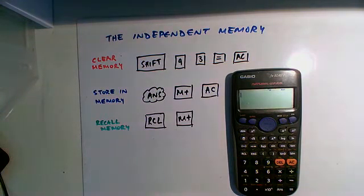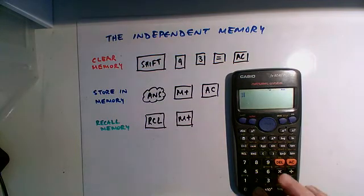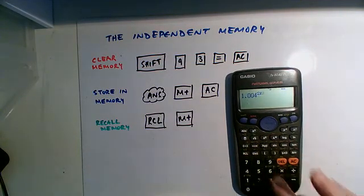So now we're good to go. There's no memories in our calculator. Now let's say I've got an answer to a part of a question that I want to store in the memory. So I'm just going to put in a number, 1.004 to the power 26.